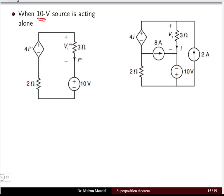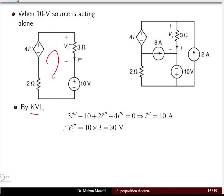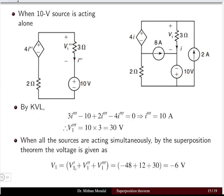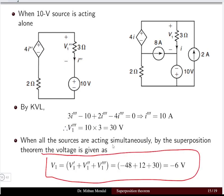For case 3, the 10 volt source acts alone. Both current sources are replaced with open circuits. The resulting circuit has only one loop, with the current as I triple dash and the dependent source as 4I triple dash. Applying KVL in this single loop gives the potential drop across the 3 ohm resistor as 30 volt. Adding all three cases: minus 48 plus 12 plus 30 gives the net potential V1 equal to minus 6 volt.